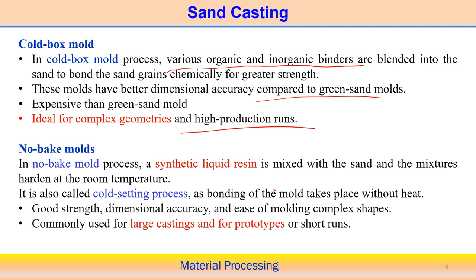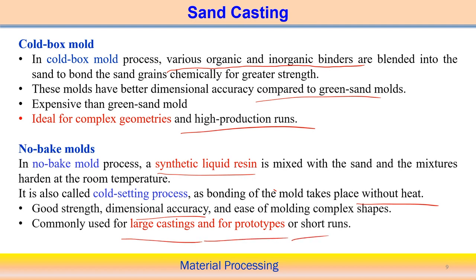The third type is the no bake mold, where a synthetic liquid resin is mixed with sand and the mixture hardens at room temperature. It is called a cold setting process because bonding of the mold takes place without application of heat. It provides good strength, dimensional accuracy, and ease of molding for very complex shapes, and is mainly used for very large castings, prototypes, or short production runs.